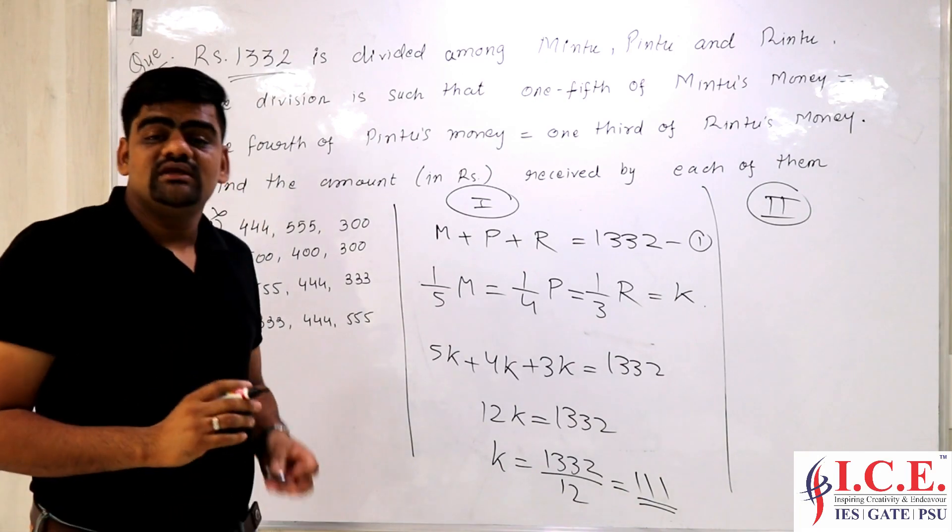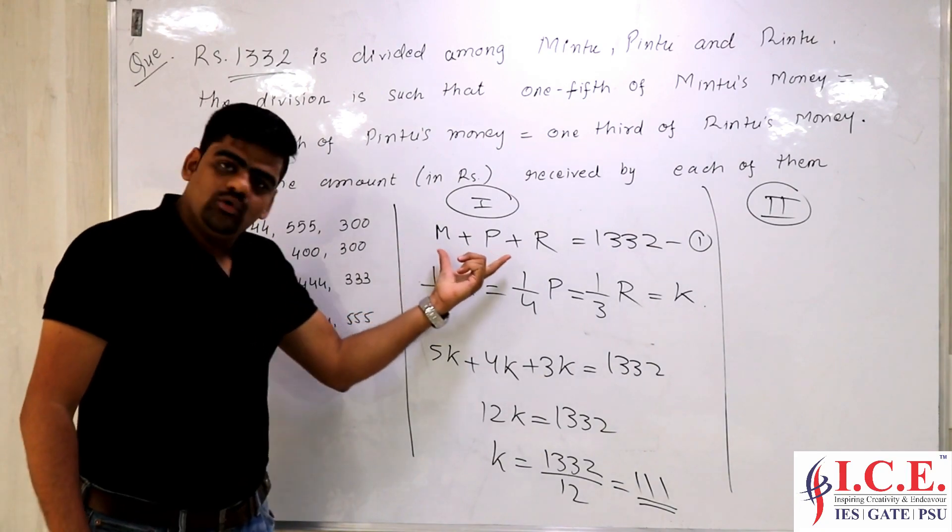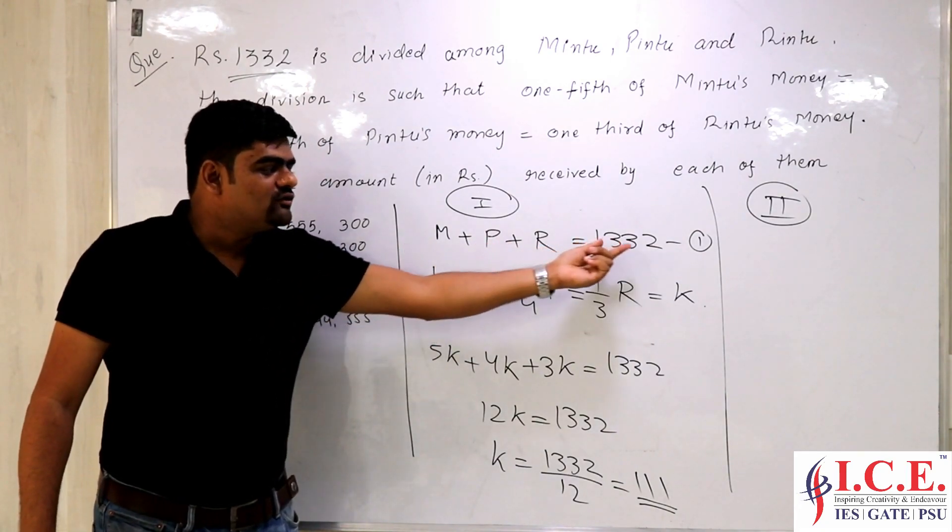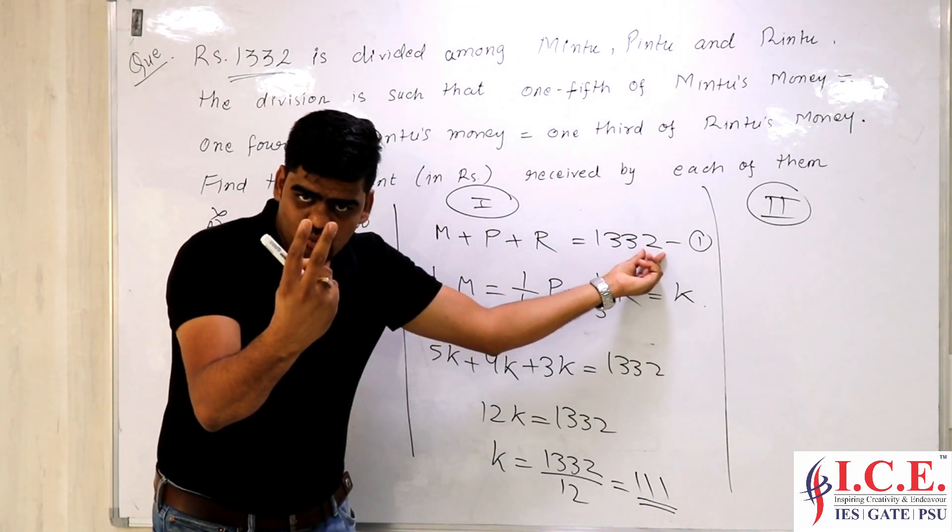One more approach I give you. In this particular case, you can be very smart and say, I know that M plus P plus R is going to be 1332. Ultimately, you see the last digit is going to be 2. Let me check.